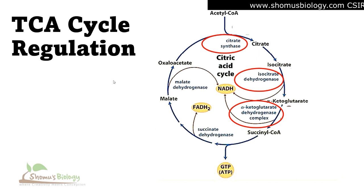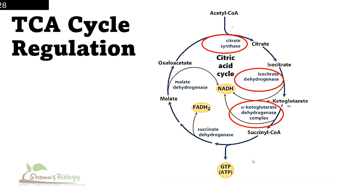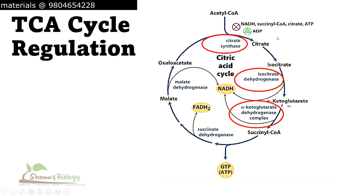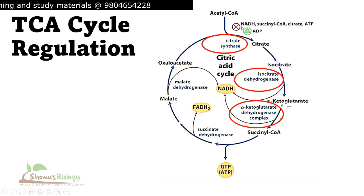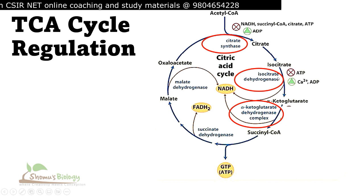These three stages are tightly regulated. For citrate synthase: citrate, as a product, inhibits the enzyme; acetyl-CoA, as the substrate, positively influences it. Since the TCA cycle ultimately produces NADH, FADH₂, and GTP (energy), ATP and NADH will inhibit these enzymes. Meanwhile, AMP or ADP — the low-energy forms — will positively influence the process. NADH negatively influences succinyl-CoA production, citrate negatively influences further steps, and ATP negatively influences citrate synthase, while ADP positively influences it.